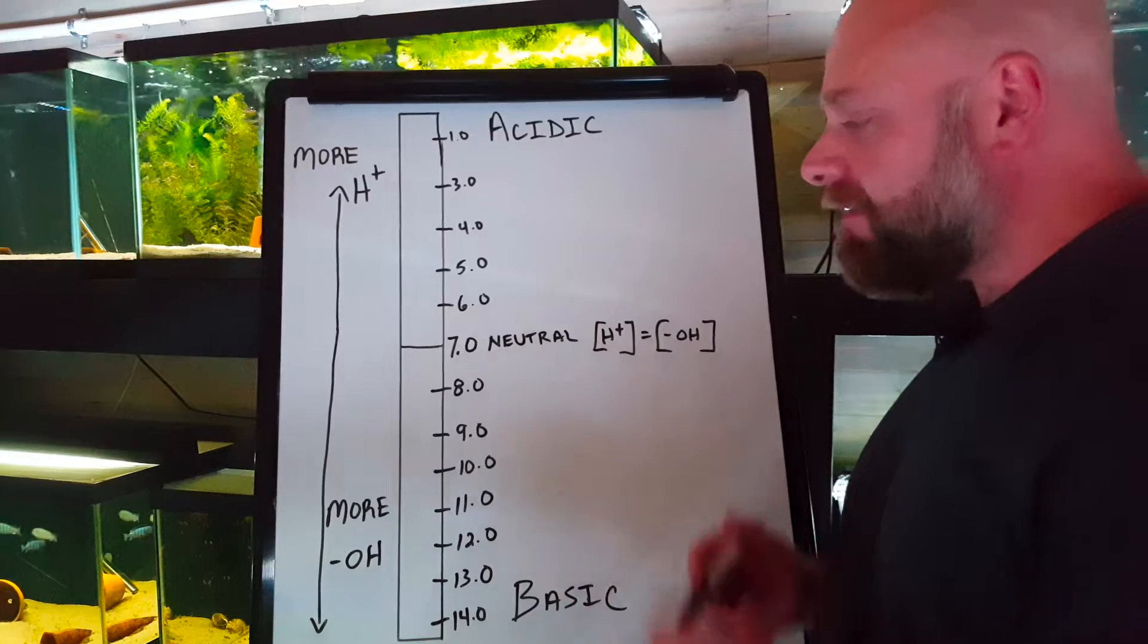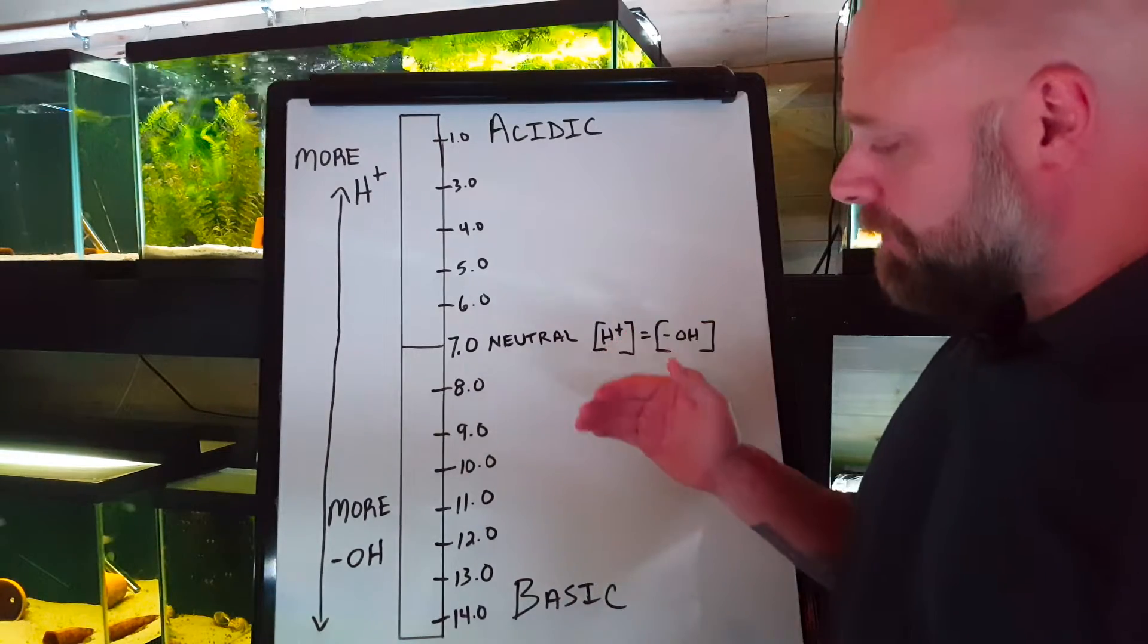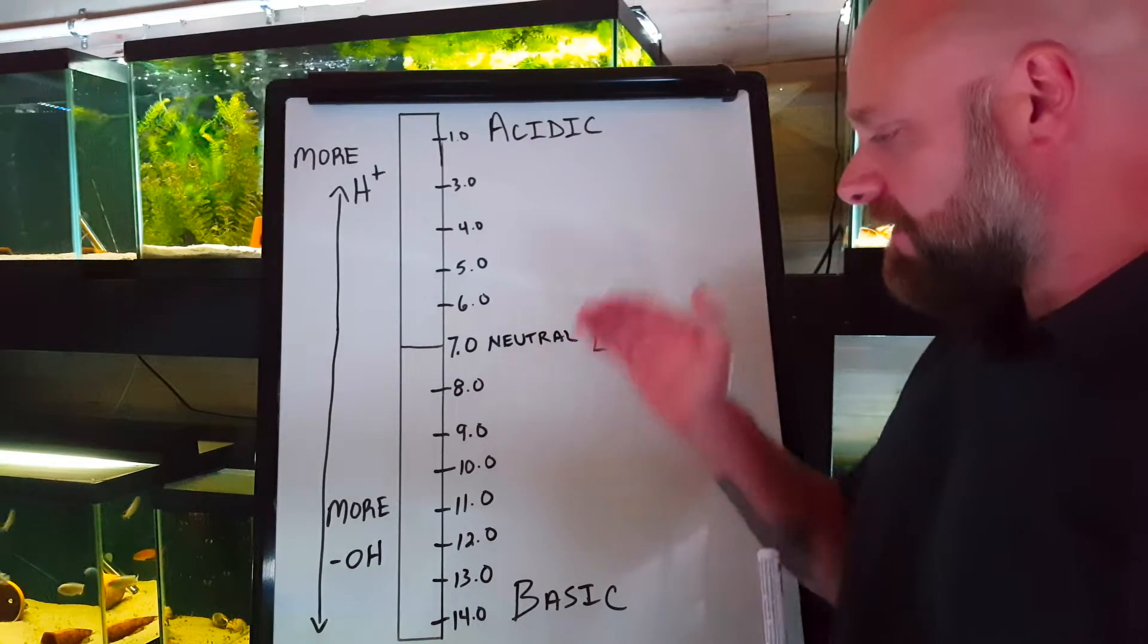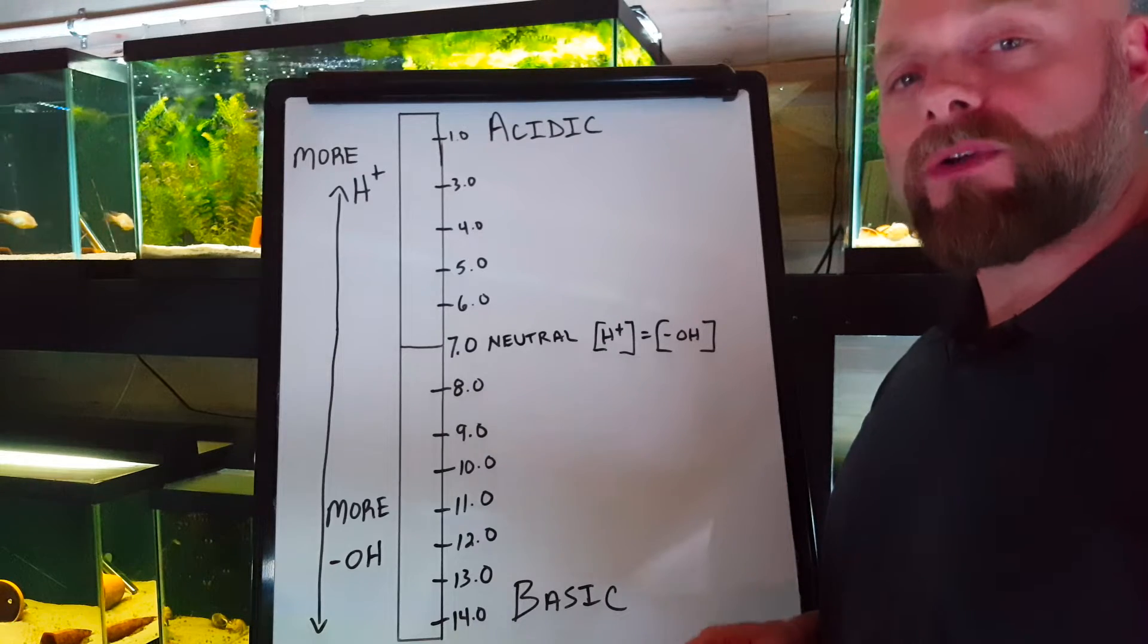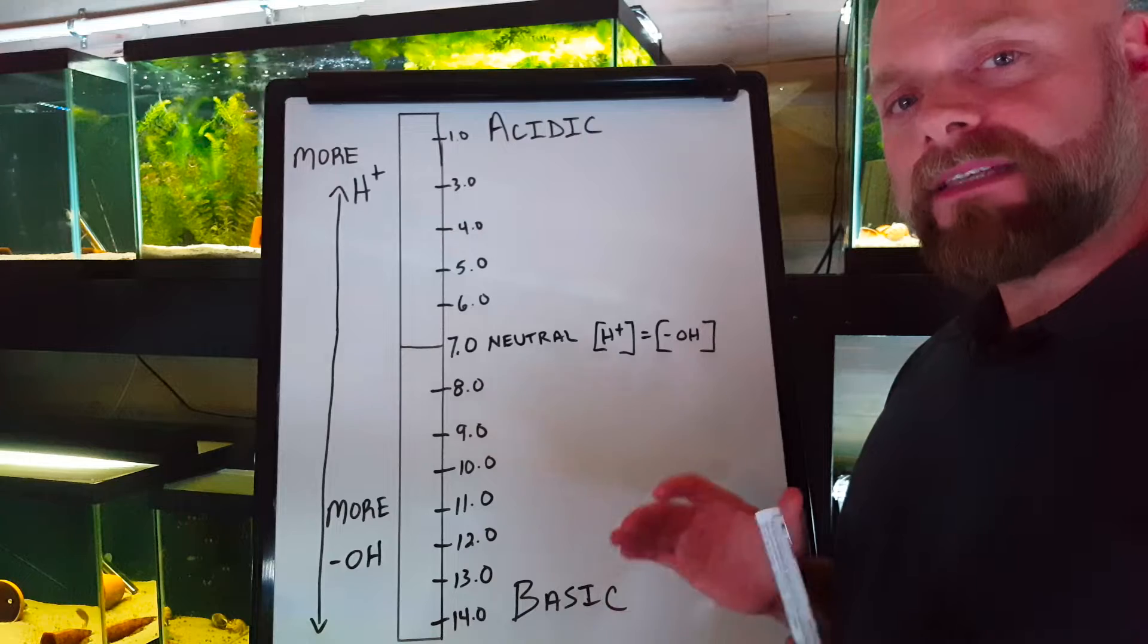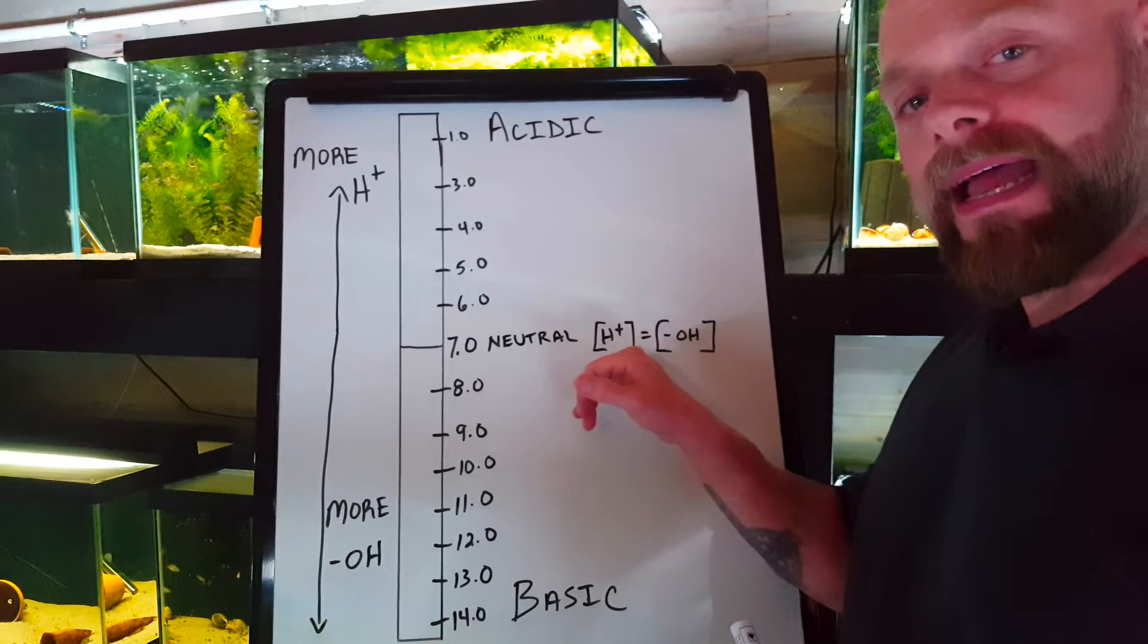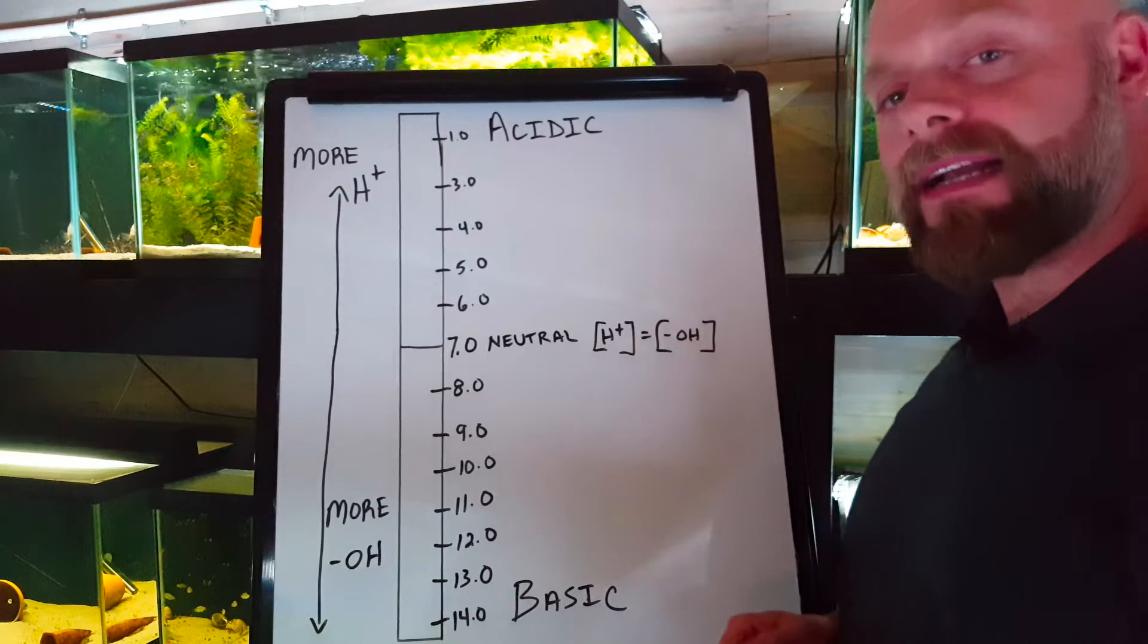What we have here is the pH scale. The pH scale goes from zero to 14, and what pH actually means is potential hydrogen. What pH is doing is it's measuring the concentration of hydrogen ions relative to the concentration of hydroxide ions.